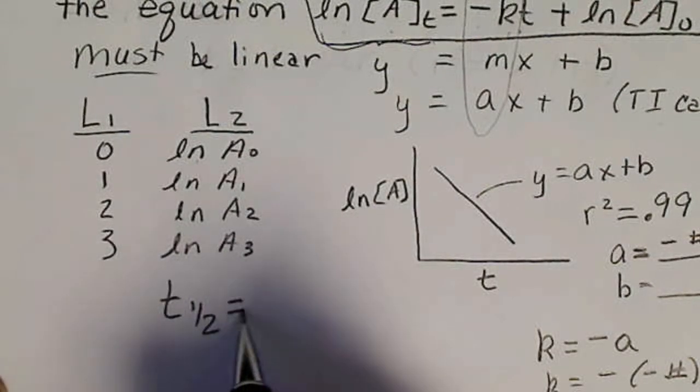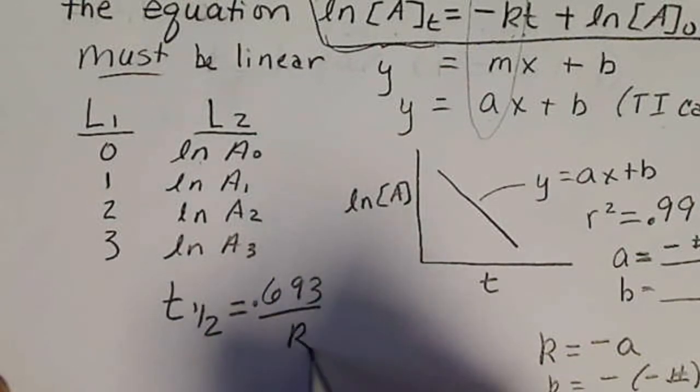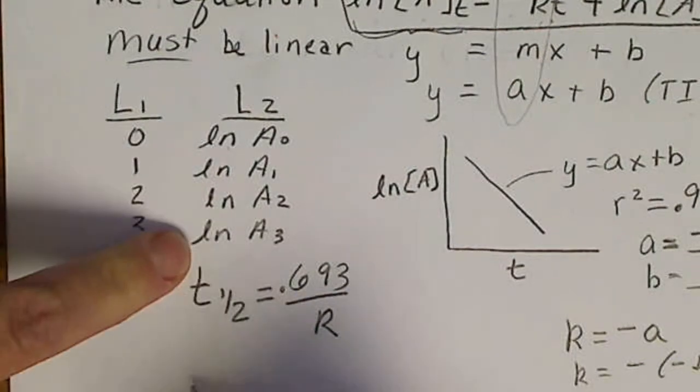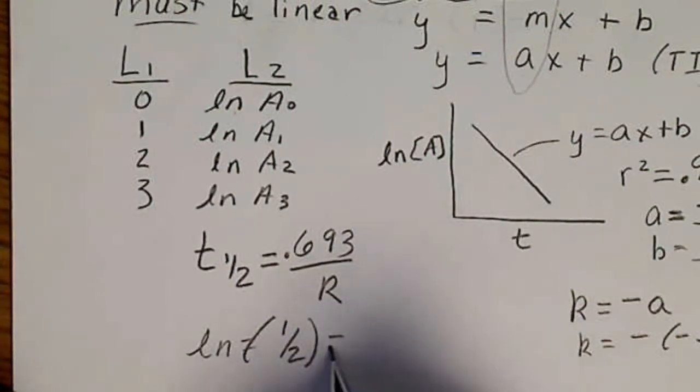Again, the half-life would be 0.693 divided by K, and that comes from the natural log of 1 half. If we take the natural log of 1 half, we're going to get negative 0.693.